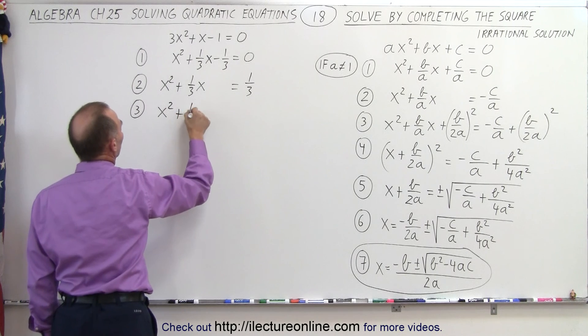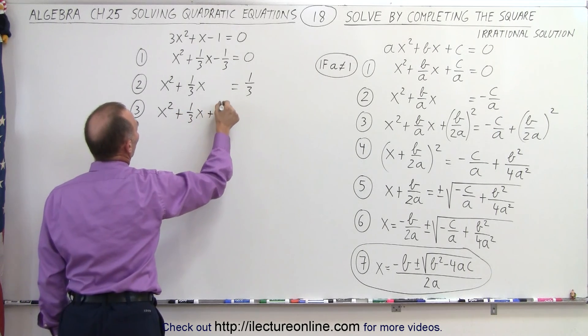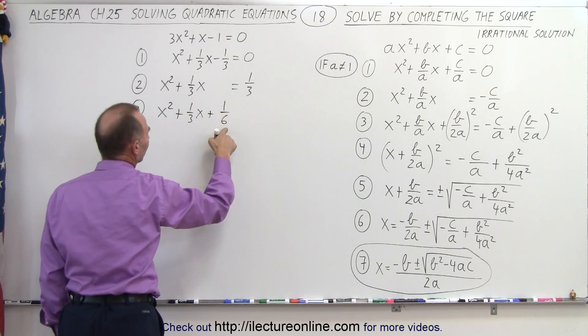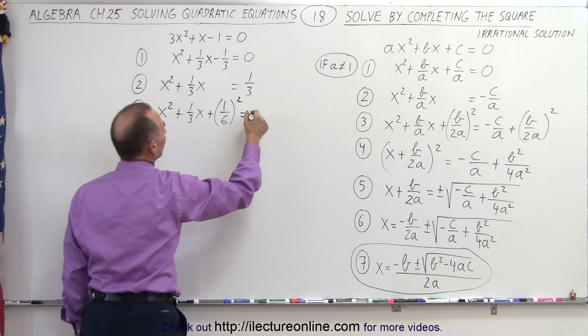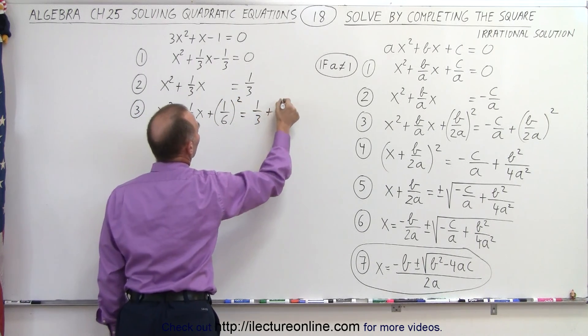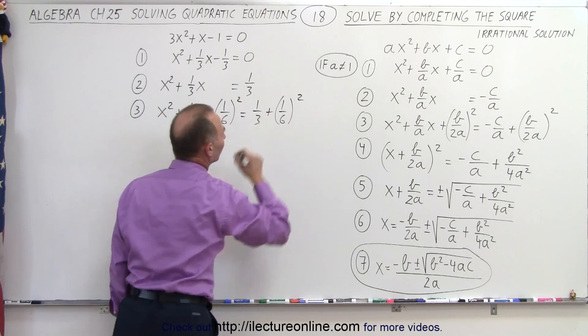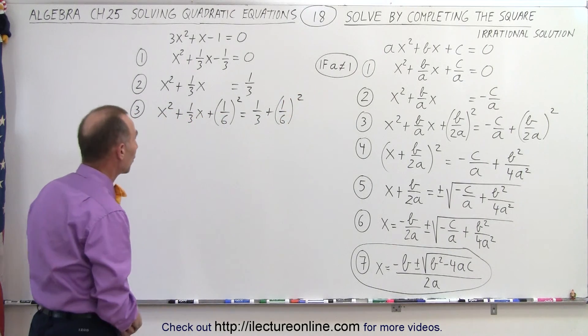So that means we get step number 3, x squared plus 1 over 3x plus 1 over 6, because 1 over 6 is half of 1 over 3. Of course, we have to square that. It's equal to 1 over 3 plus 1 over 6 quantity squared. We need to, of course, add it to both sides of the equation.